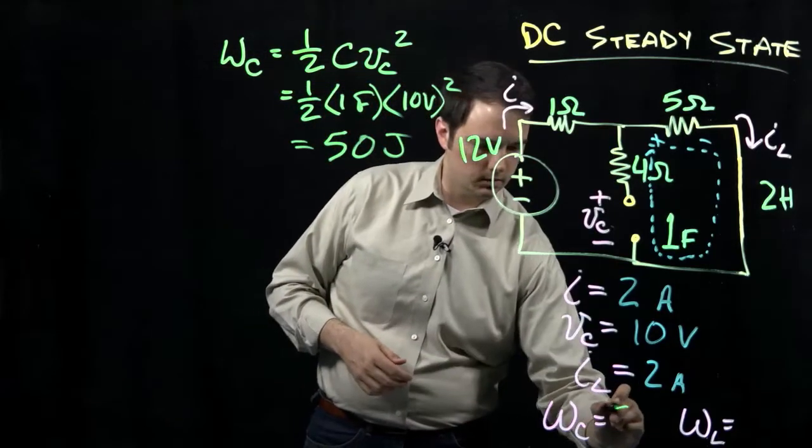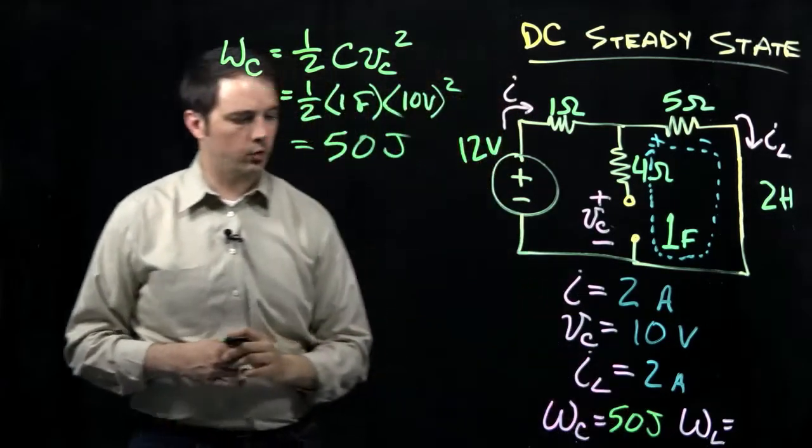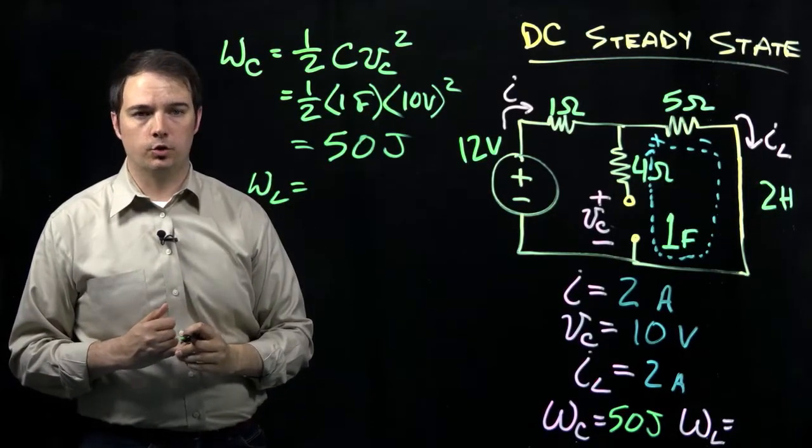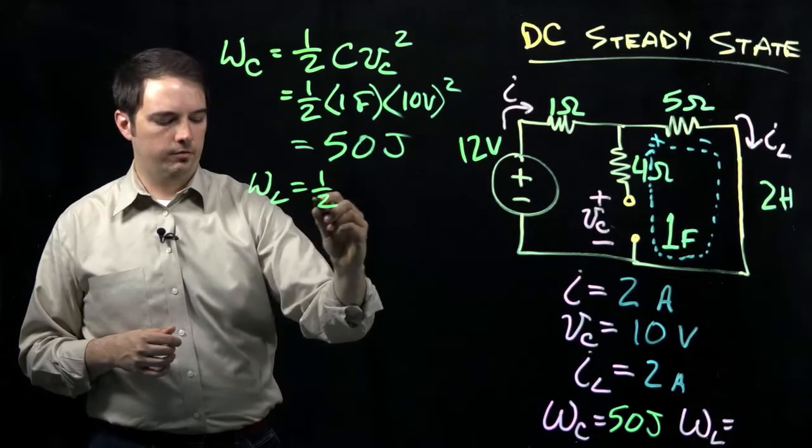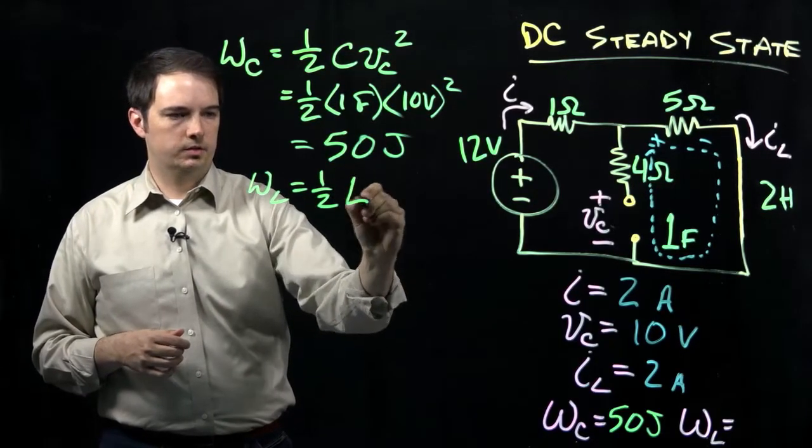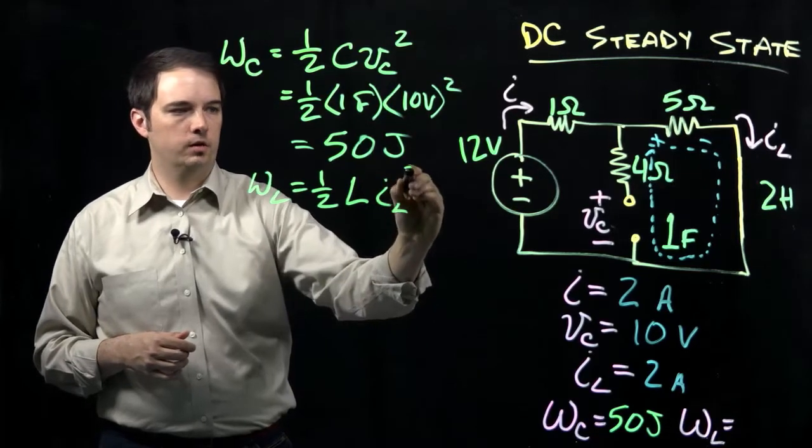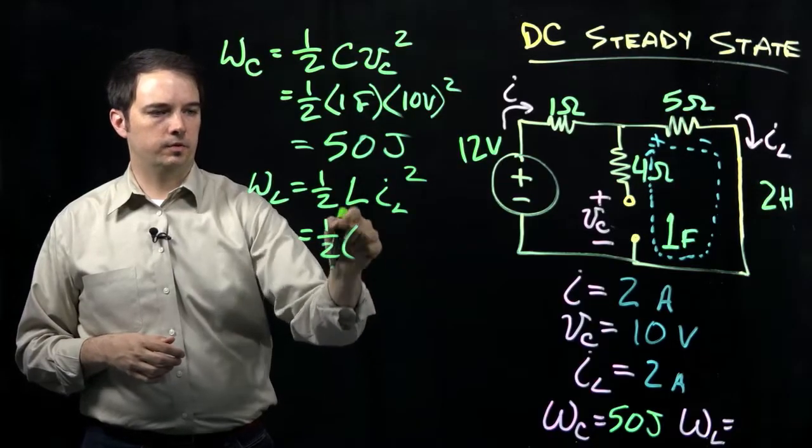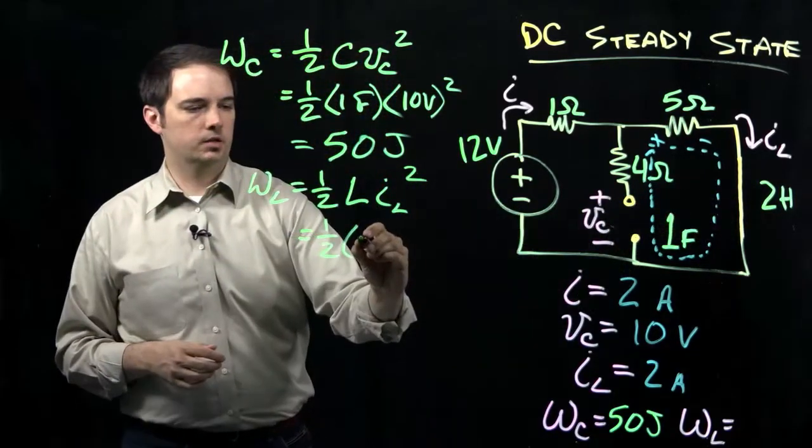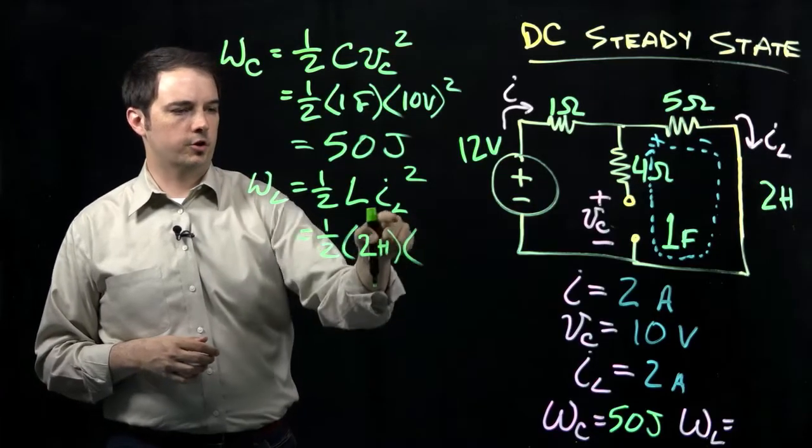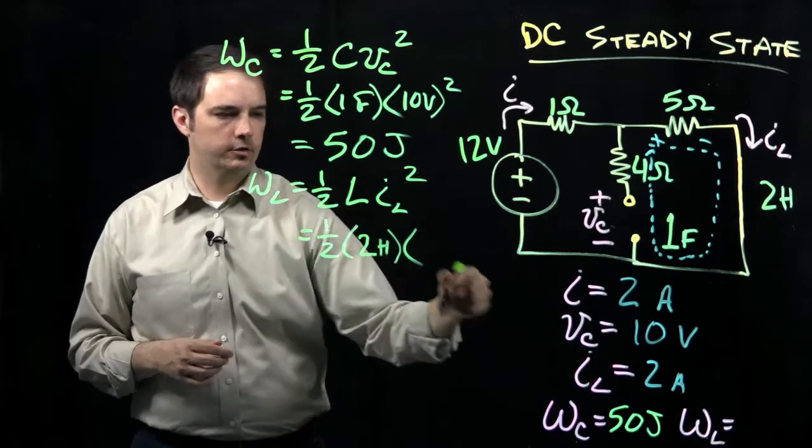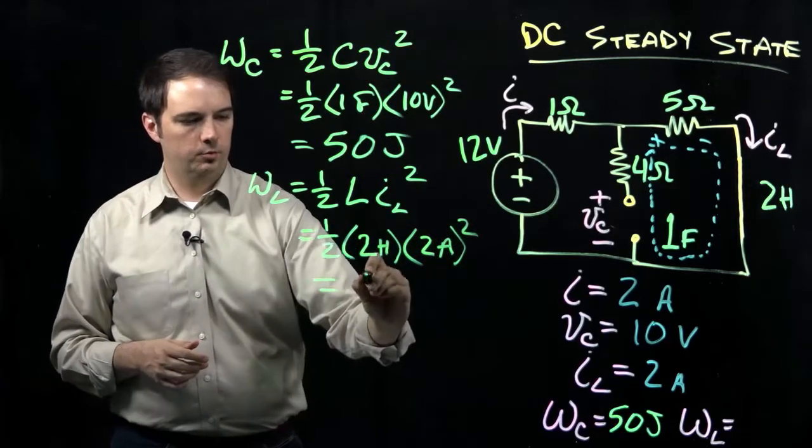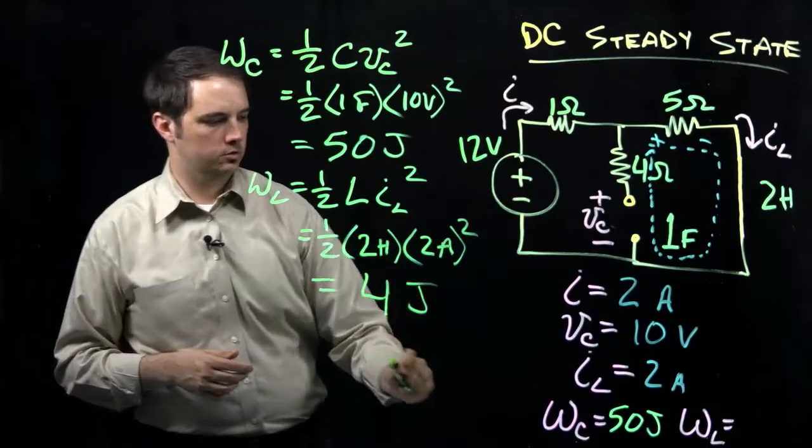These points here are pretty straightforward, just plugging in some numbers to get to the quantities. Similarly, we know that the energy stored in an inductor is equal to 1/2 of the inductance L times the current through the inductor squared, so 1/2 L I squared. Plugging in the respective values, we know L is this 2 Henrys, times the current through my inductor is 2 amps, that quantity squared. So here we should end up with a total of 4 joules.